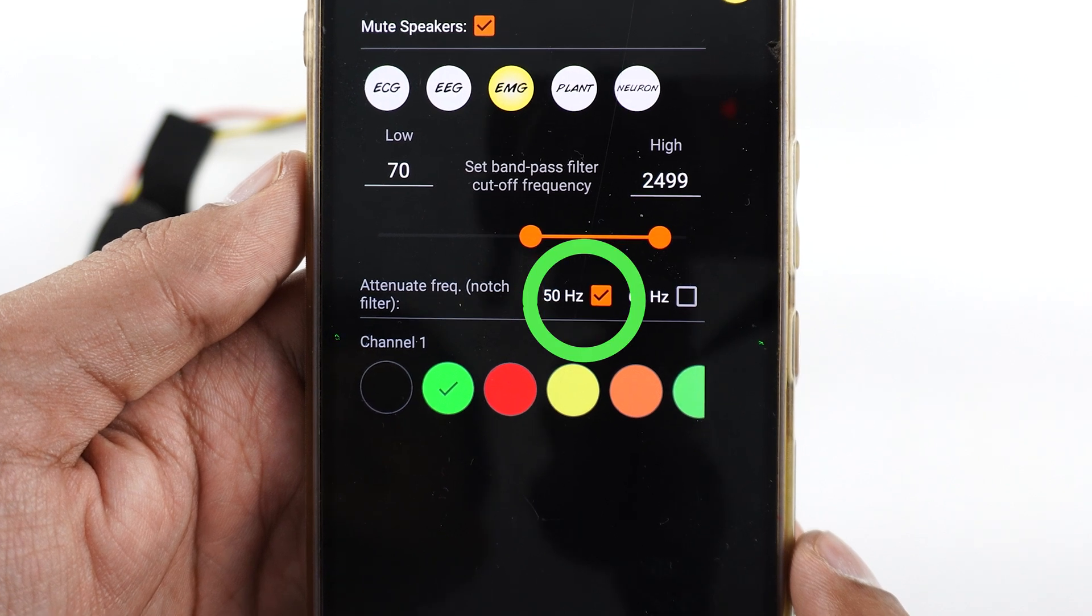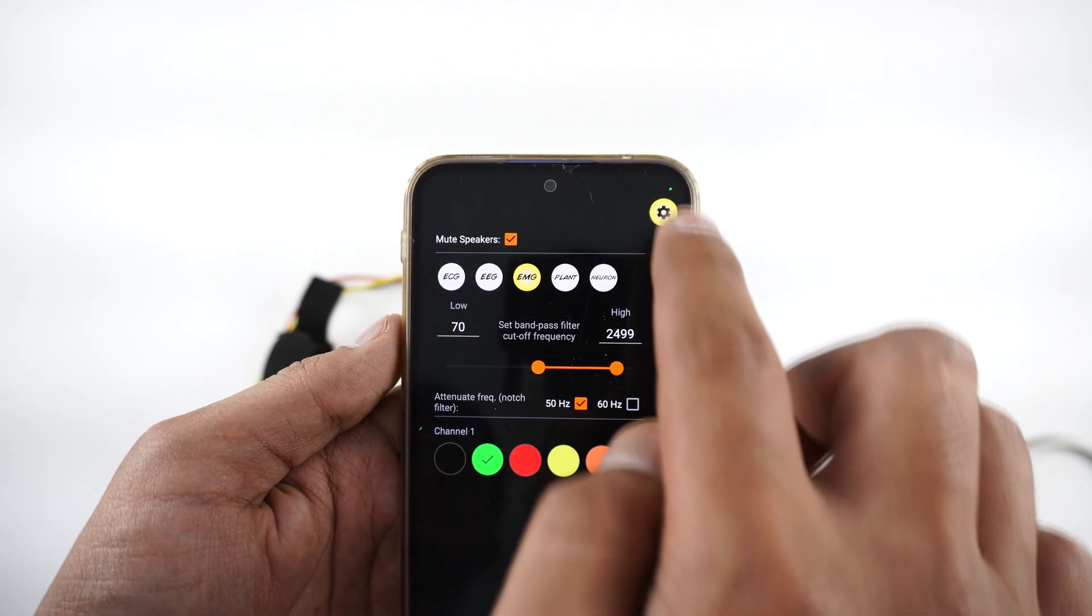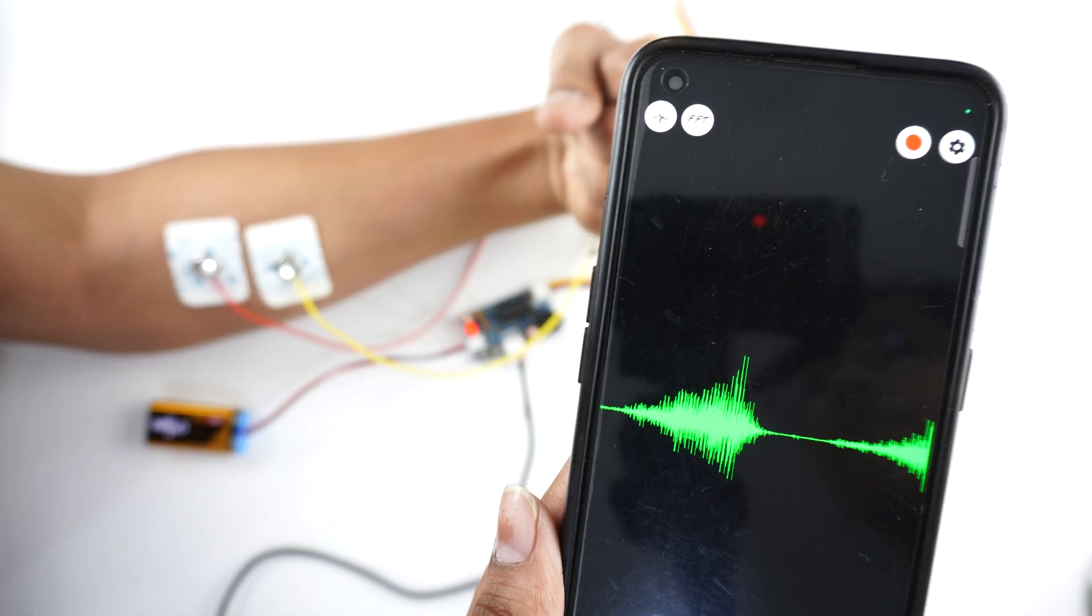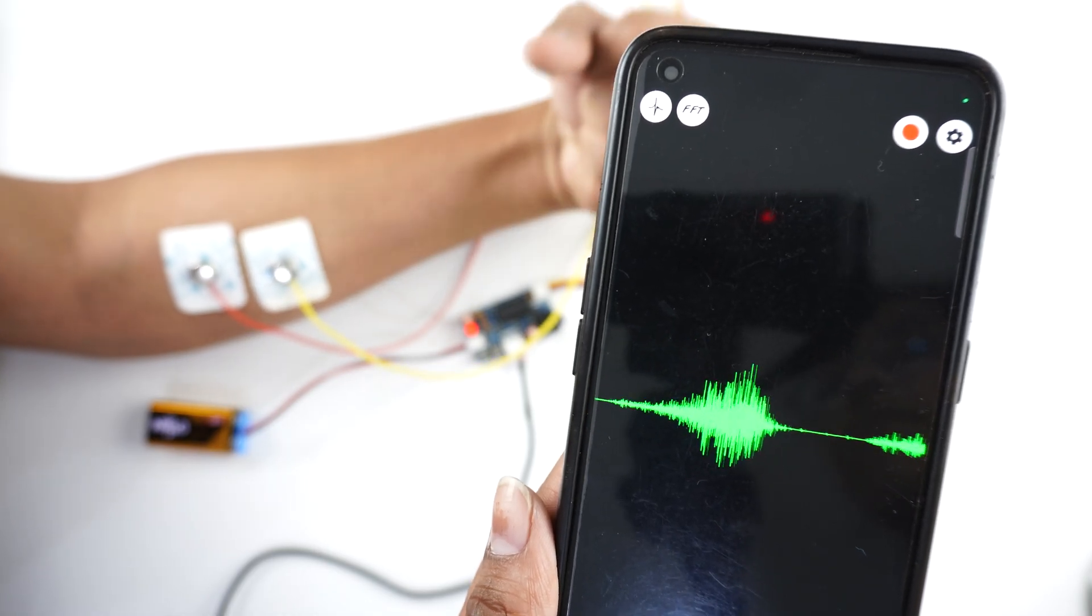This AC current acts as a noise in the signals, so we have to remove it by applying this notch filter. Again, click on the setting icon to close it and you are ready to go. Flex your muscles to be able to visualize the muscle signals.